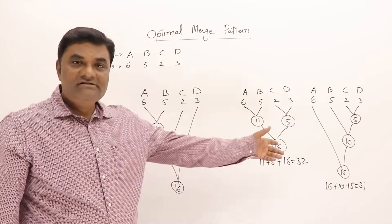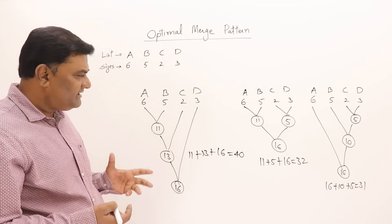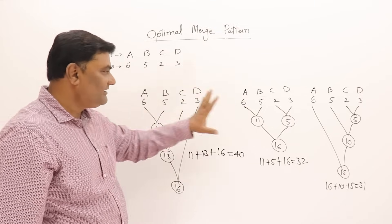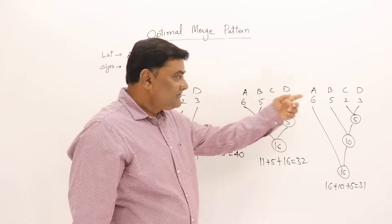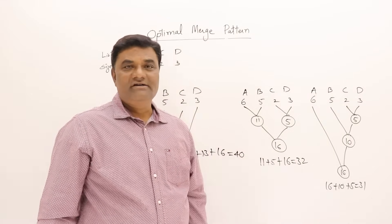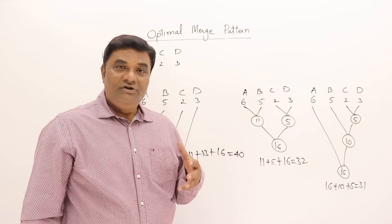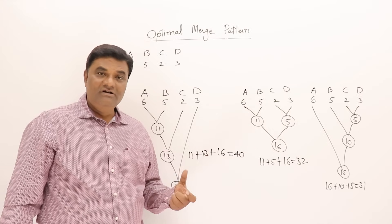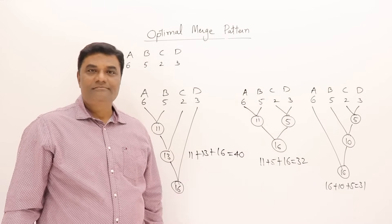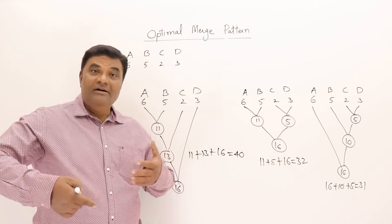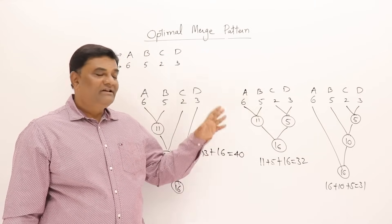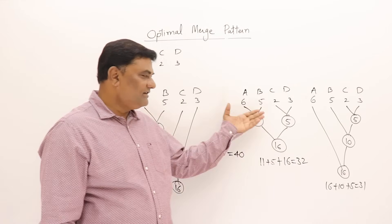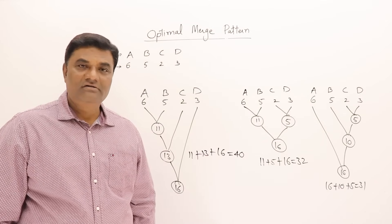I got 31, which is still less than 40 and 32. Is there any other method that gives less than 31? Looking at the different patterns, in the third pattern I was always selecting the two smaller lists for merging — that is why I got the minimum result. So the greedy method we should follow is: always merge the pair of smallest-size lists. Following this gives the best, minimum total merging time.